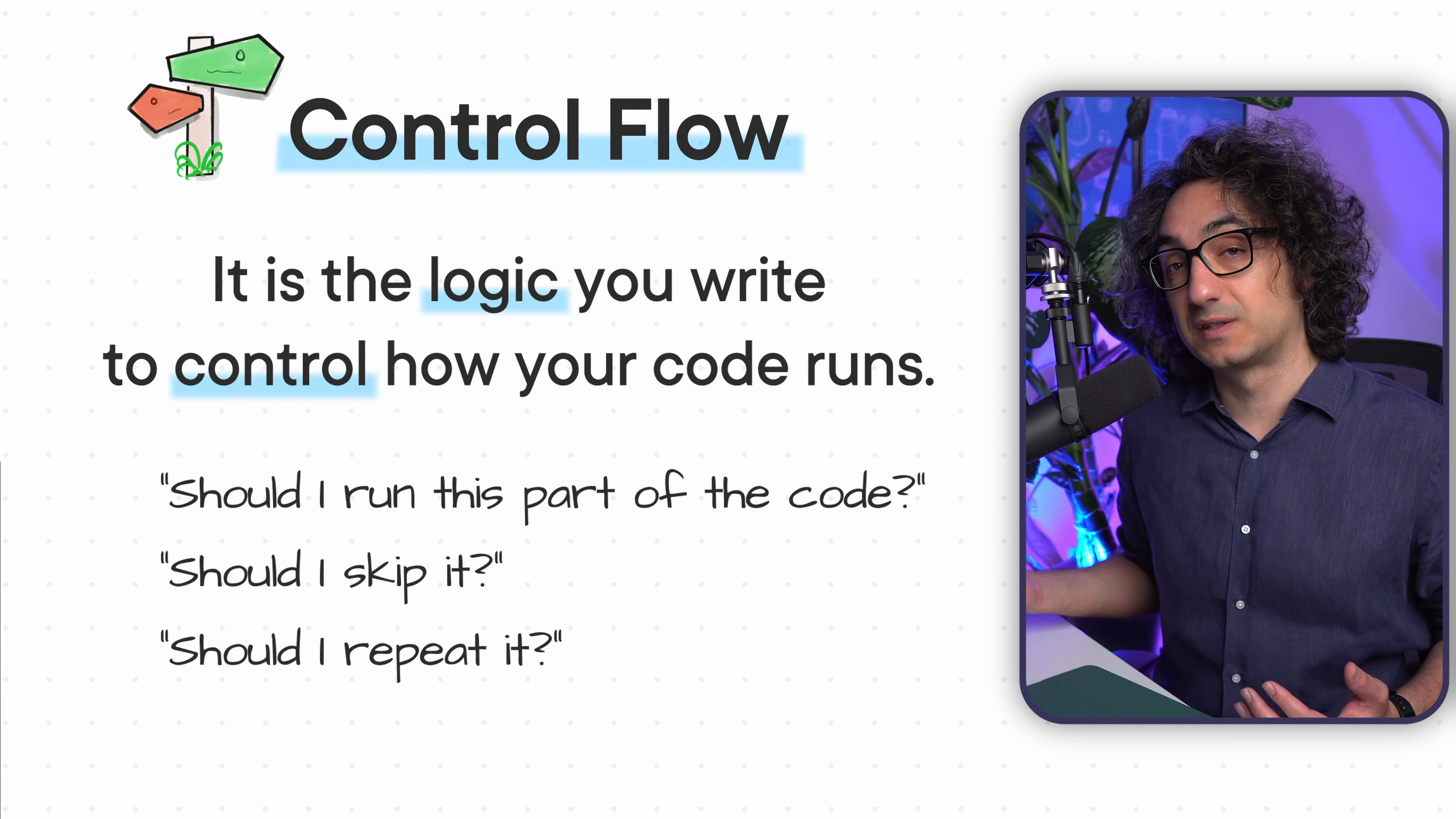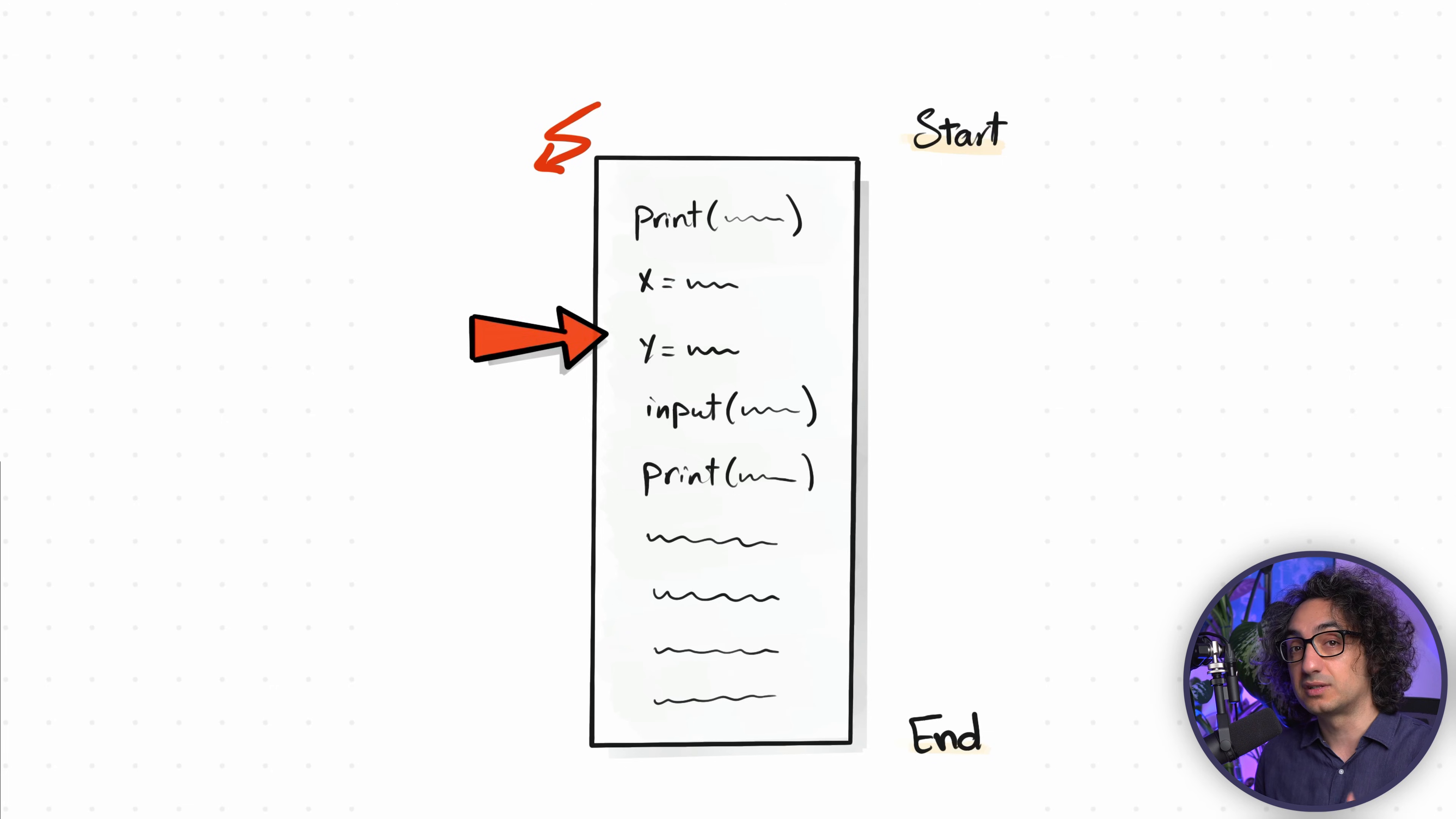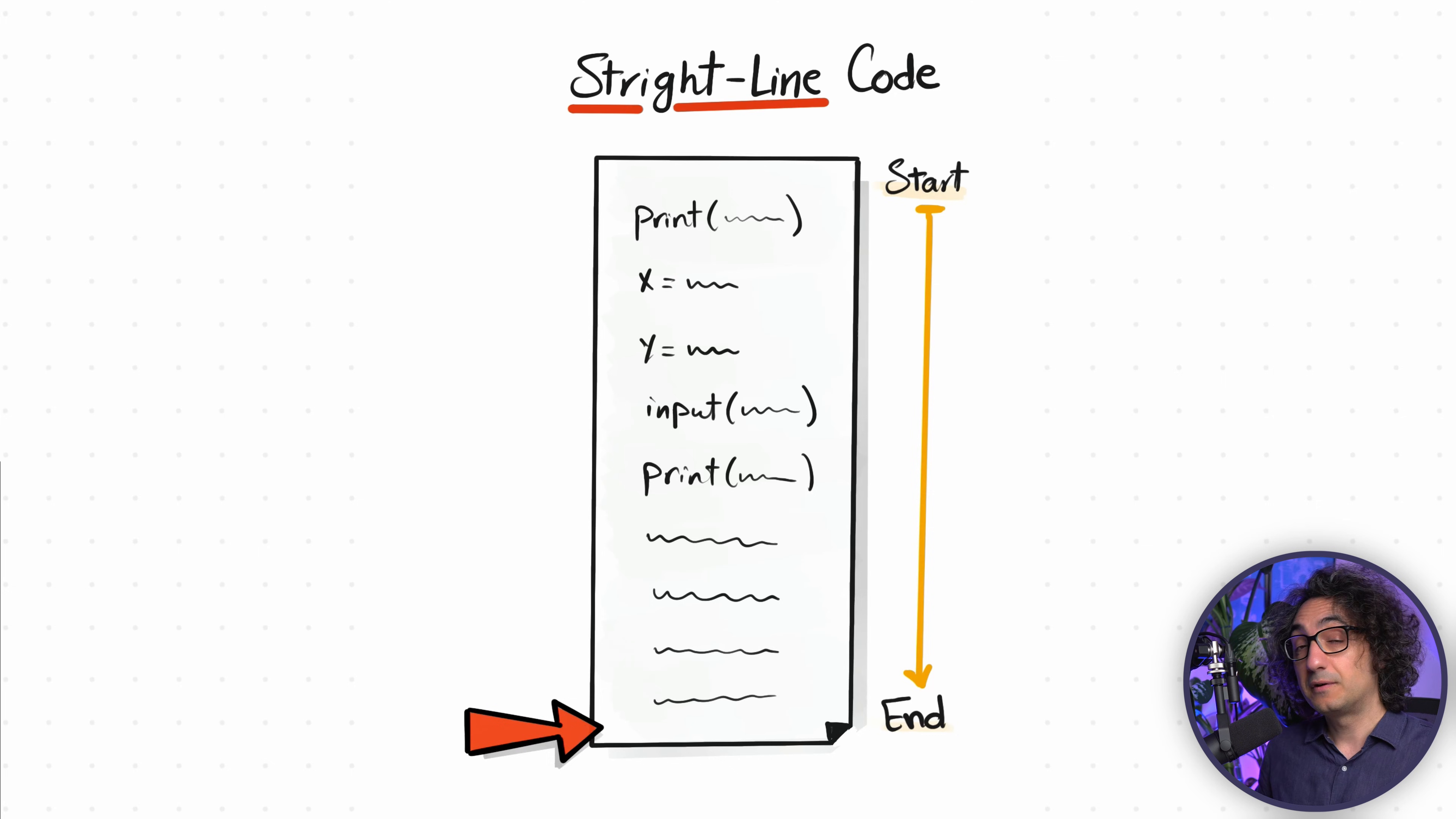Let's understand what this means exactly. So far what we have done is we have a Python script and we start from top to bottom writing commands step by step: print this, assign that, get an input from user, print again. It's like you are creating a to-do list for Python, and once you execute it, Python has to go from the top and start executing your commands step by step until it reaches the bottom of your code.